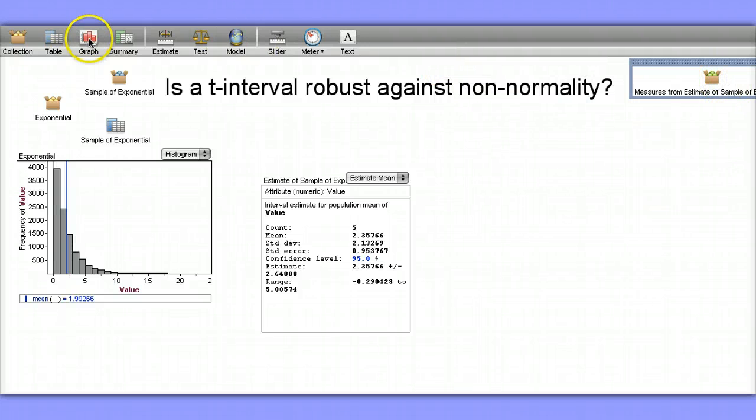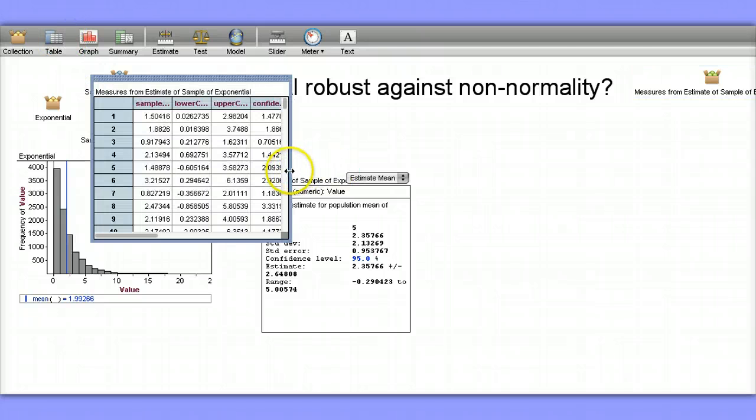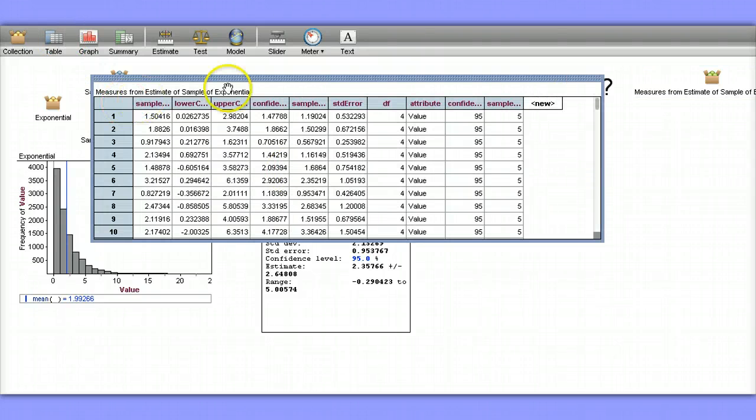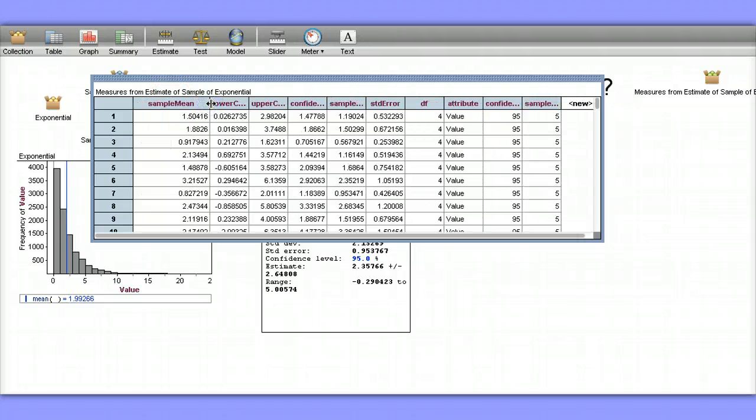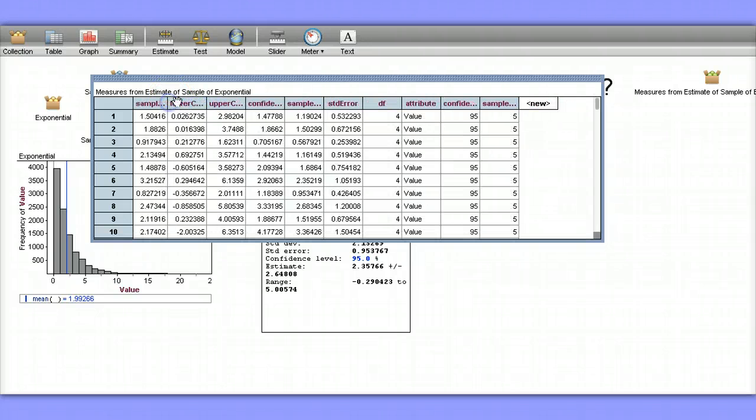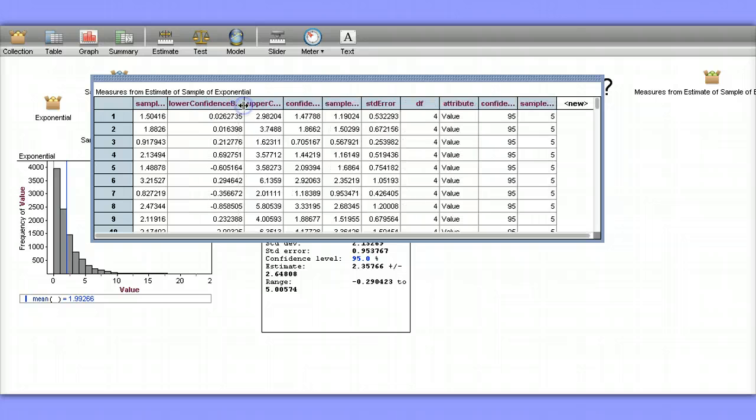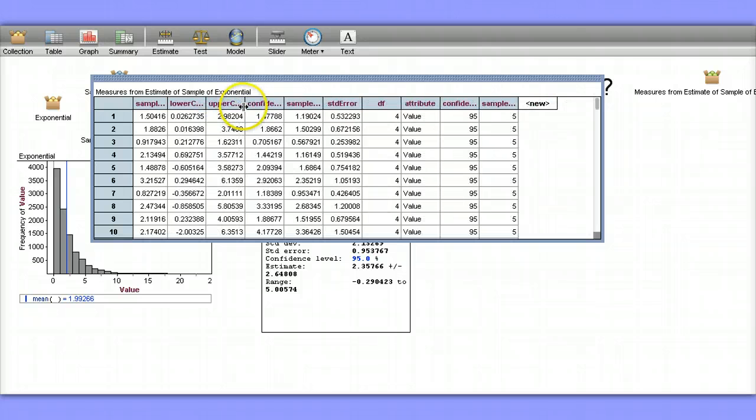Let's actually take a look at what is in this collection. We can see, as I mentioned earlier, that we have a sample mean of the five values that were sampled, the lower confidence bound, the upper confidence bound.